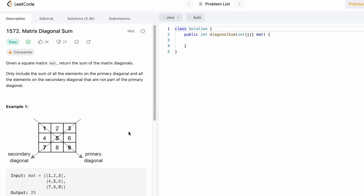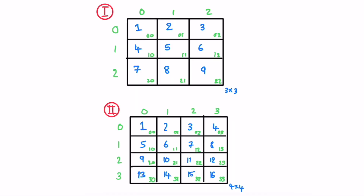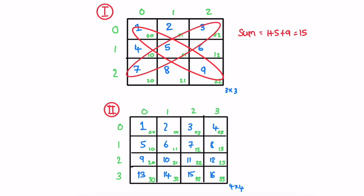I've taken two examples — let's solve example one first. We have to find the elements in the two diagonals: primary and secondary. The sum of elements on the primary diagonal is 15 and the sum of elements on the secondary diagonal is also 15. But the middle element is appearing twice, so we have to subtract it once.